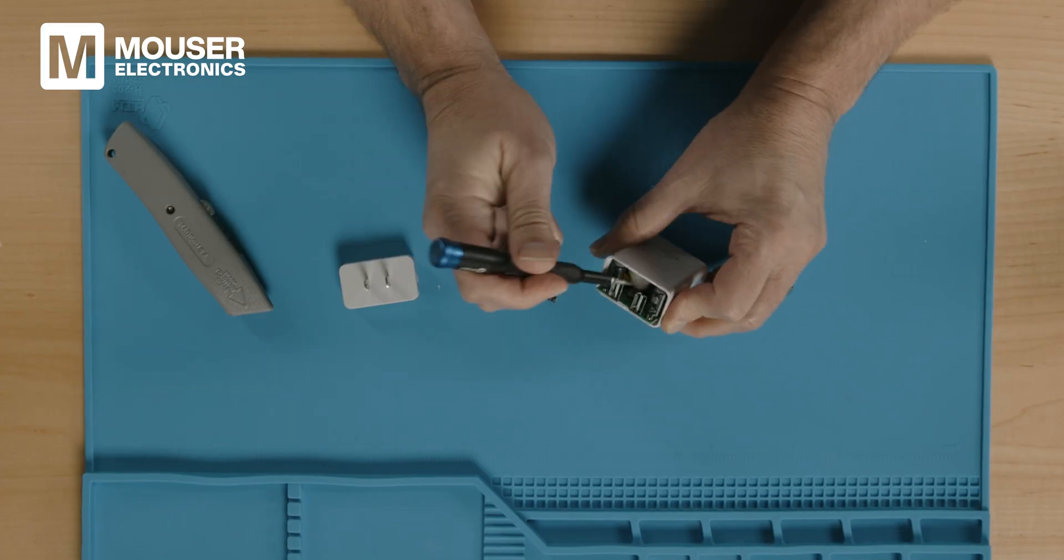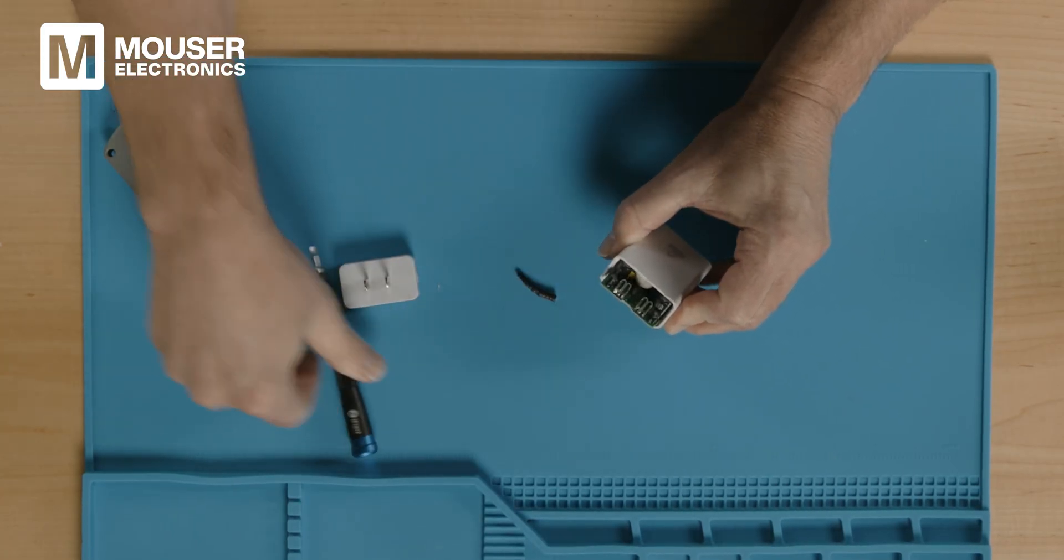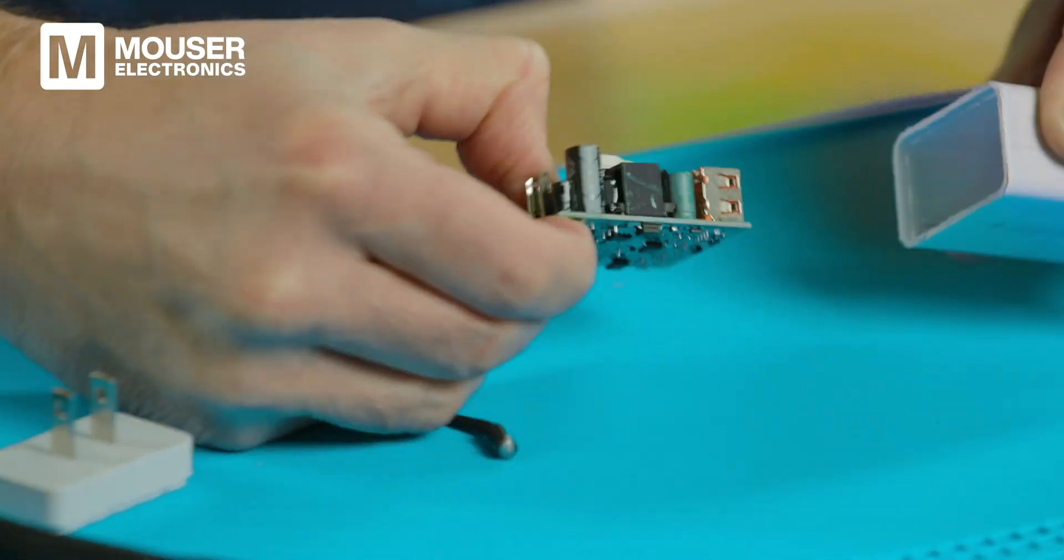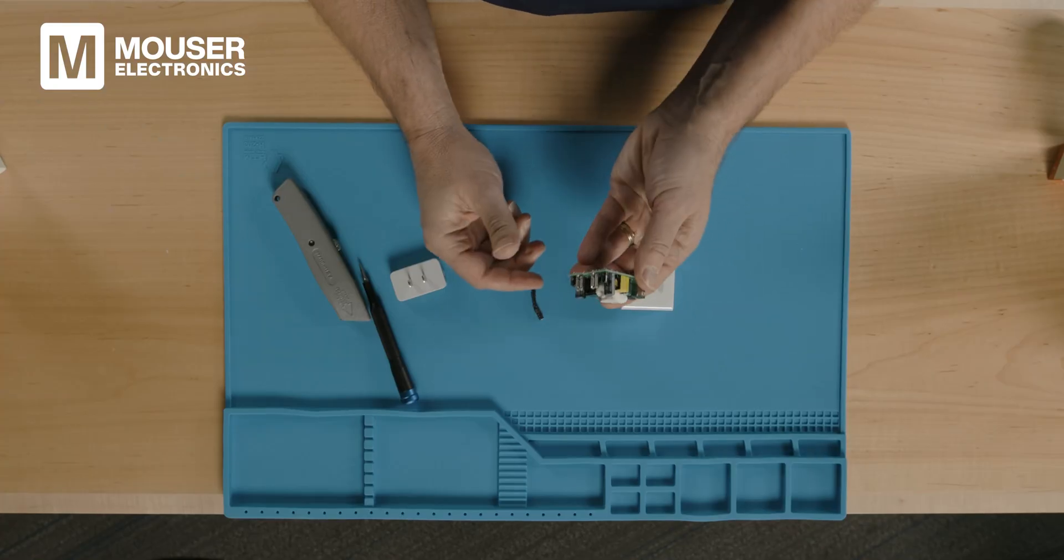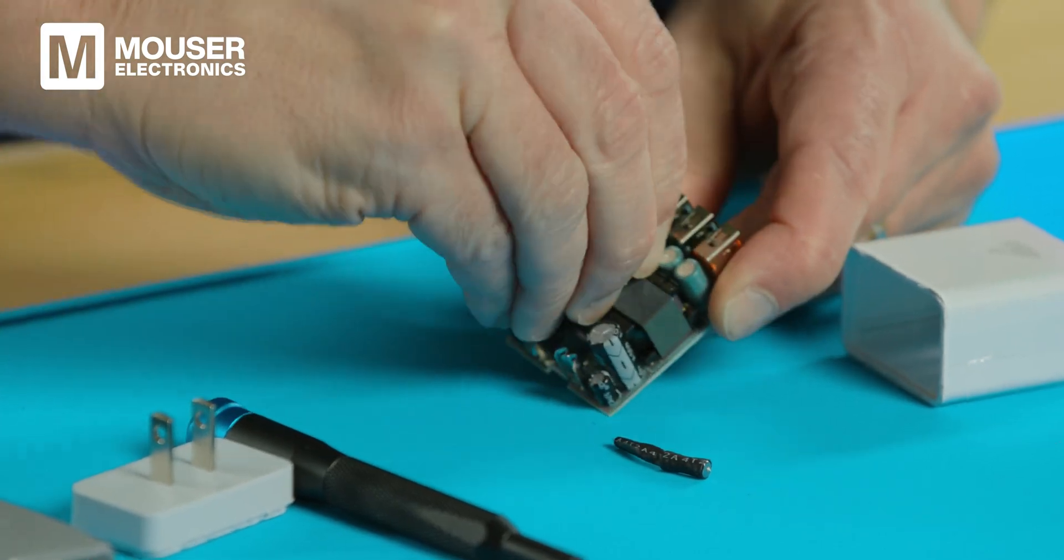I want to pull this PCB out, but we're going to have to cut this white epoxy that's been put in there to provide some mechanical stability. On the top of this board, all we see is through-hole components. Let's get rid of this epoxy so we can see everything a little better.